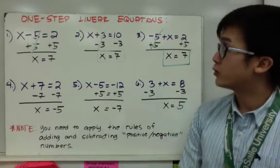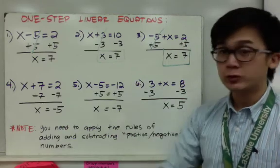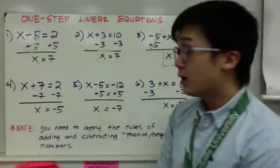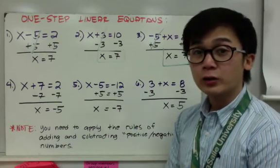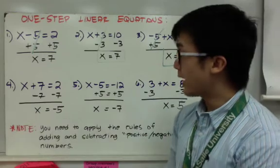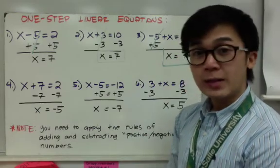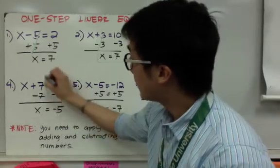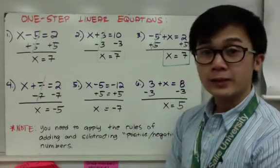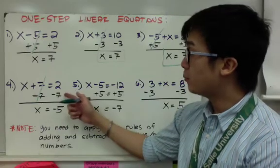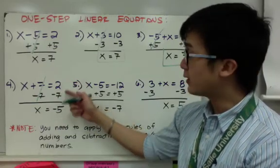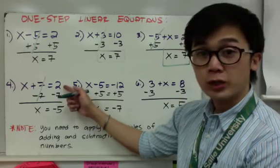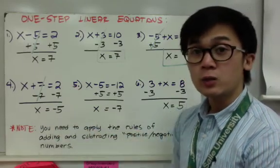Now, the next three examples require you to remember how to add and subtract signed numbers. For number 4, x plus 7 equals 2: subtract 7 from both sides, giving x equals 2 minus 7. You cannot take a bigger number from a smaller number directly — 7 minus 2 is 5, but since you are subtracting a bigger number from a smaller number, the answer is negative. So x equals negative 5.